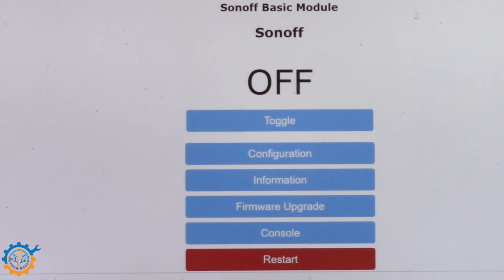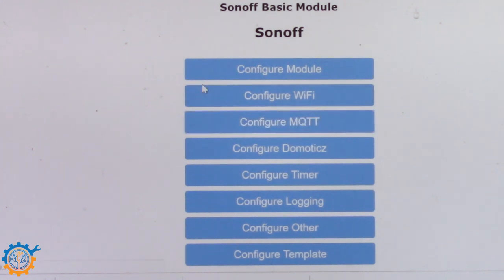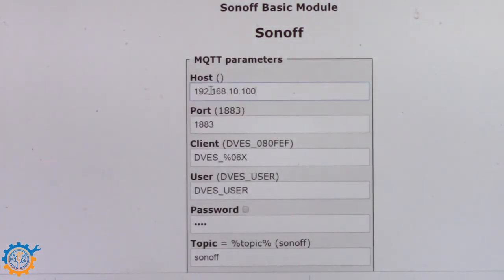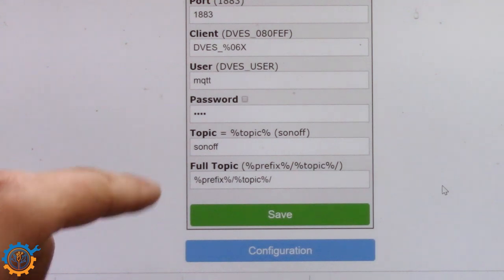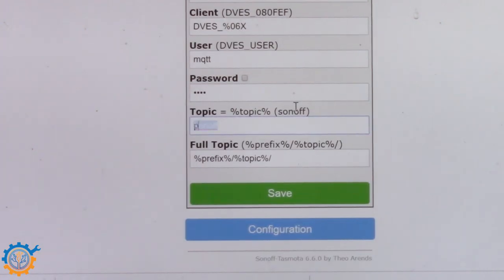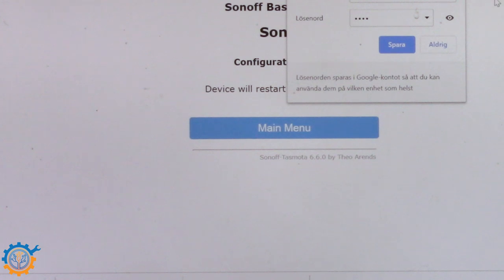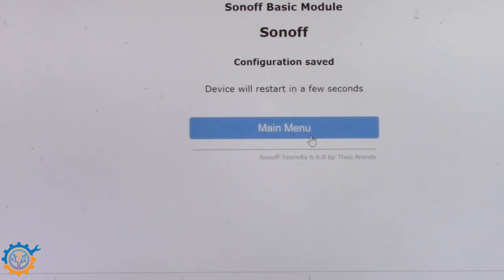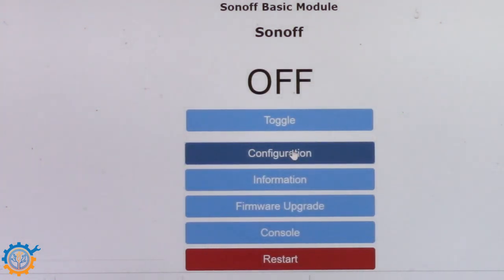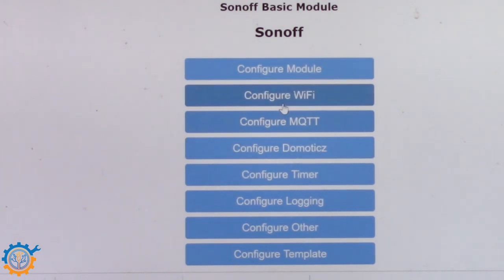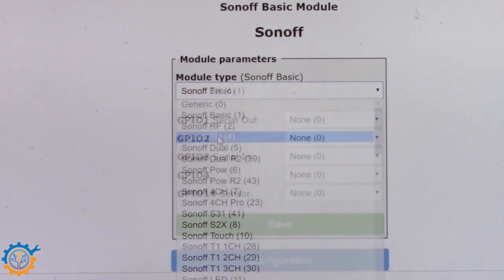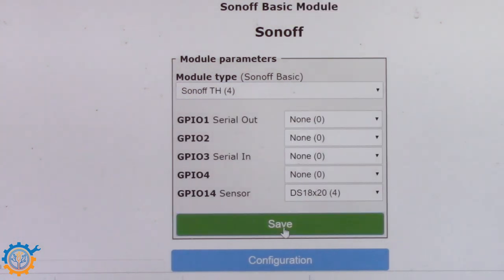When you are logged in to the device it's time to configure it. I start with configuring the MQTT server that I'm going to use. The topic should be pool. I'm saving it. The device is now rebooting. Wait a couple of seconds. Then we will get back into the graphical user interface. Configuration again, and I'm going to configure the module. I'm selecting TH because that's what I'm having. Saving again.